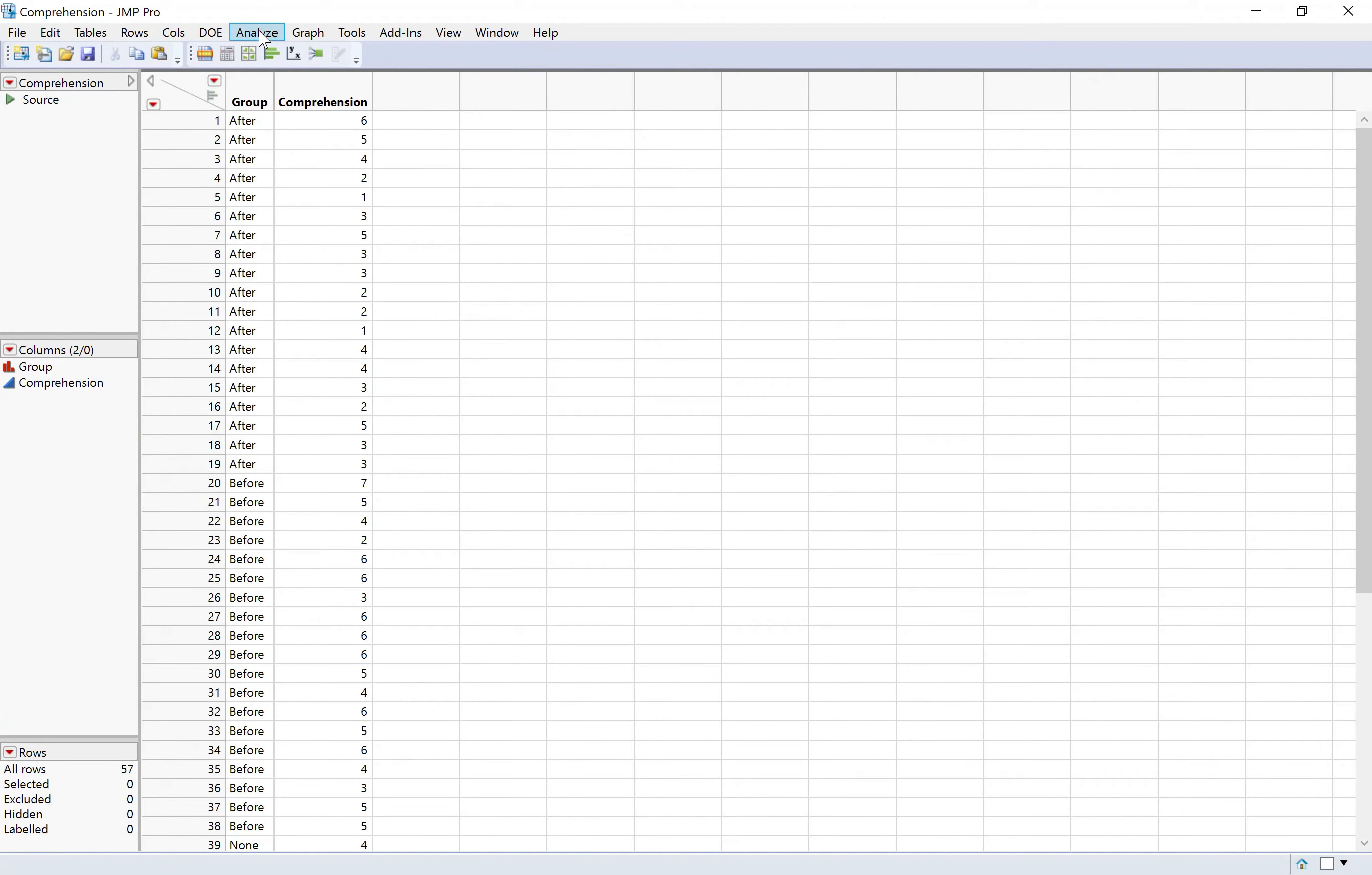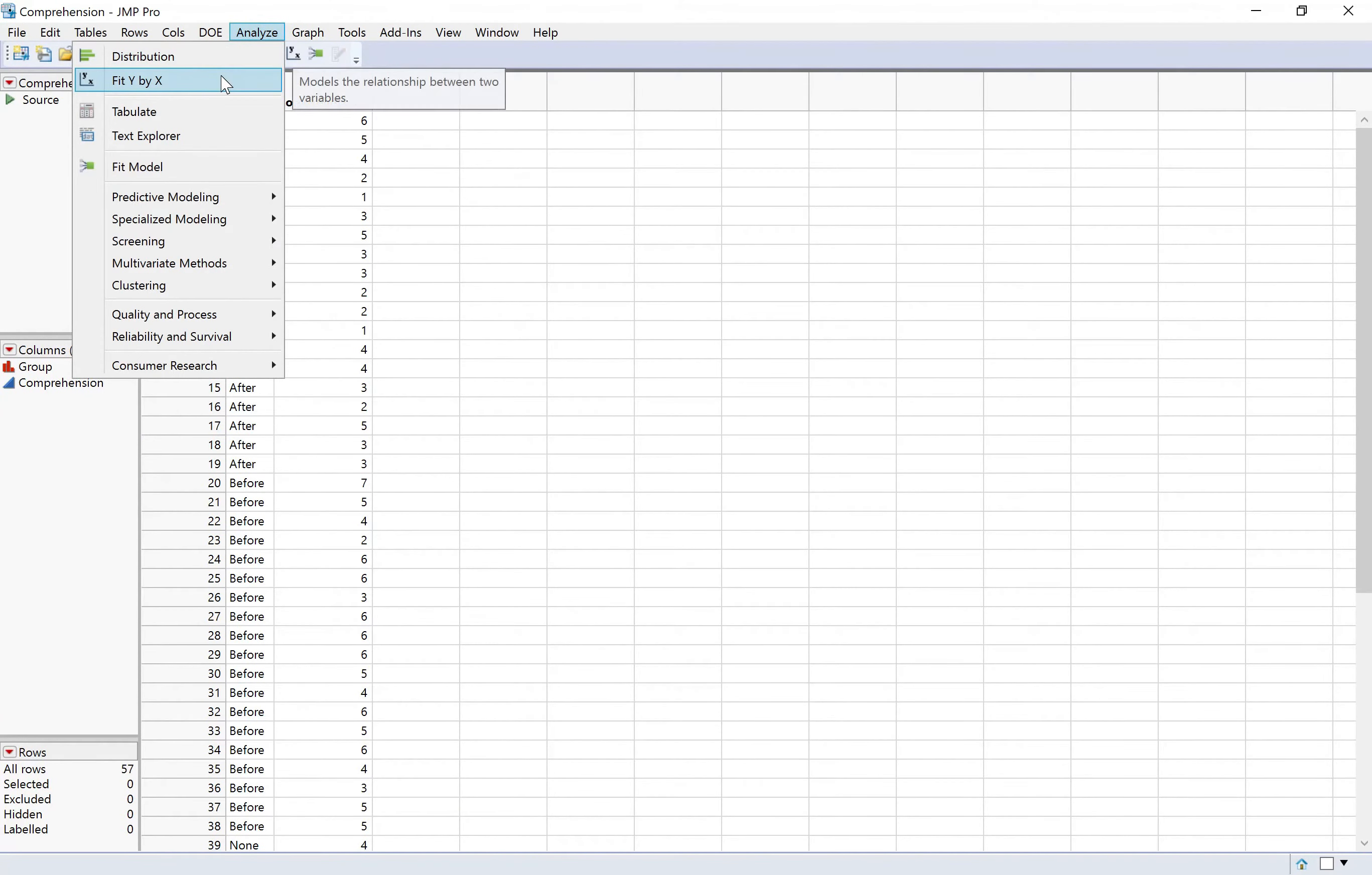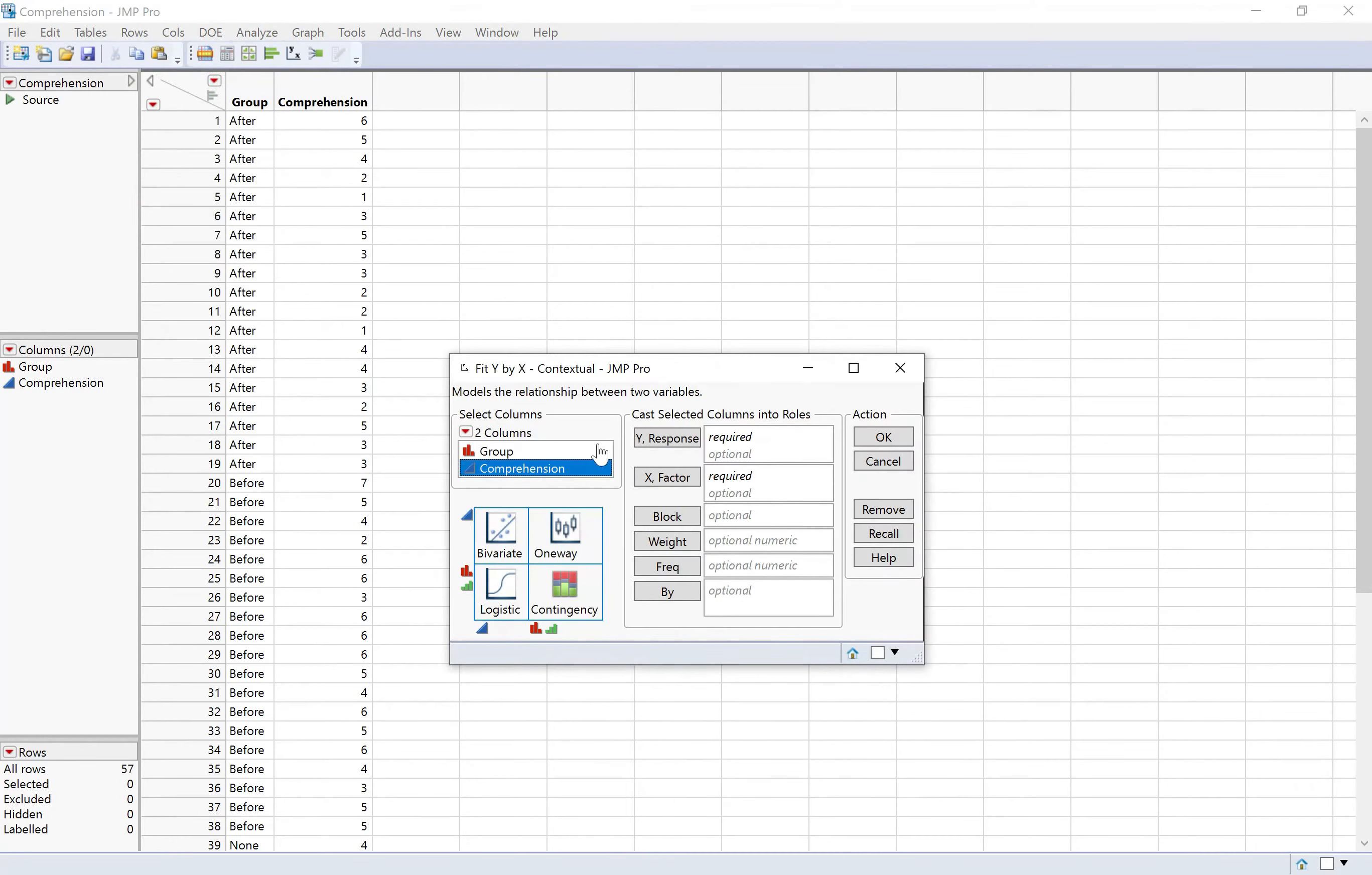So when we analyzed this the first time, we just did ANALYZE fit y by x, and we put comprehension as our response variable and group as our explanatory variable. And you can see in the little table here that when you have a categorical explanatory variable and a quantitative response, that fit y by x is going to give you a one-way ANOVA.